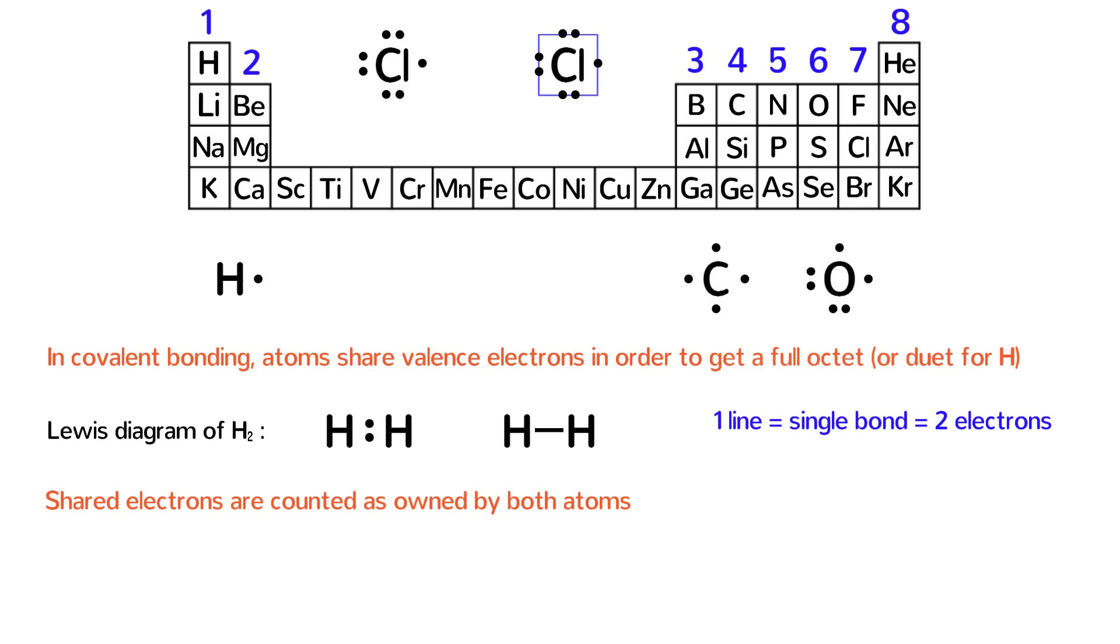In the same way, two lines between atoms would be a double bond and would be the sharing of four electrons. An example of a molecule with a double bond is oxygen, which looks like this. Notice that in this Lewis diagram, both oxygen atoms have eight valence electrons, four from the double bond and four from the lone pairs of electrons. By the way, two dots together are called a lone pair of electrons.